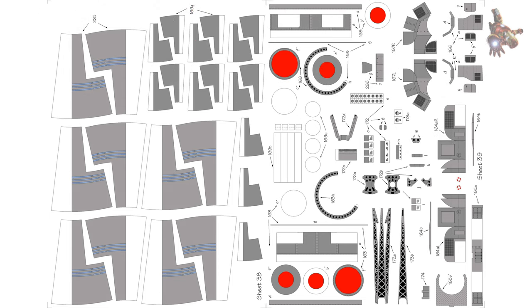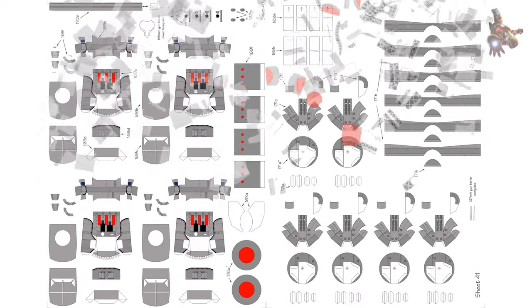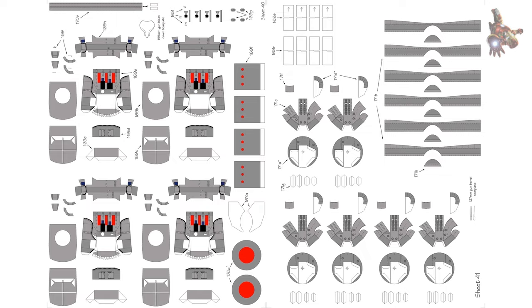Armament assembly instructions: Follow the guidelines from figures 43 to 46 to assemble the main gun turrets. Each of the identical turrets can be placed in any of three positions on the deck.